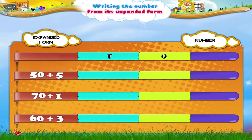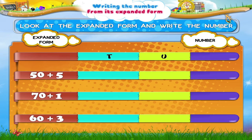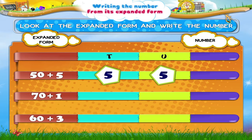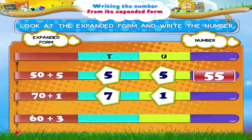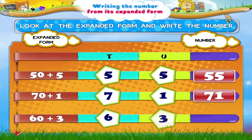Let us revise what we have learnt. Look at the expanded form and write the number. 50 plus 5 is 55. 70 plus 1 is 71. 60 plus 3 is 63.